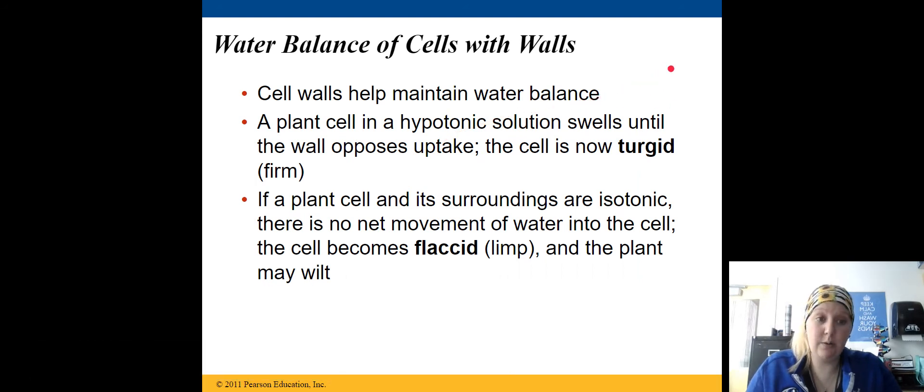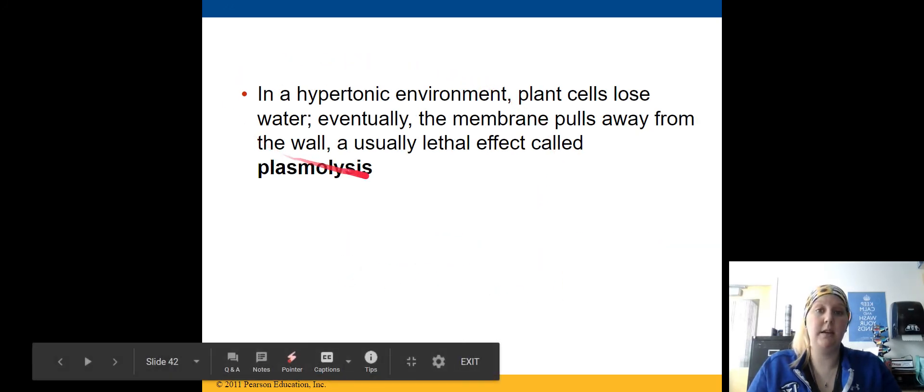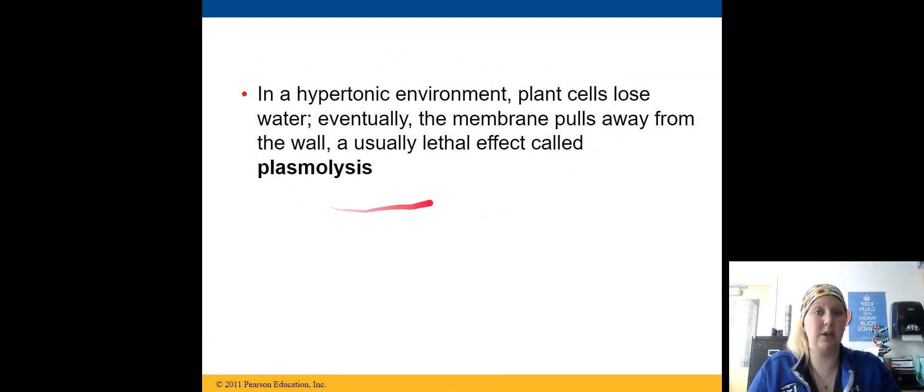Cell walls do help maintain water balance. A plant cell in a hypotonic solution swells into its turgor pressure where it wants to be. If the surroundings are isotonic, it becomes flaccid and may wilt. And then if the environment gets too dry, the cell will lose all of its water, and the membrane will pull away from the cell wall, which is usually lethal.